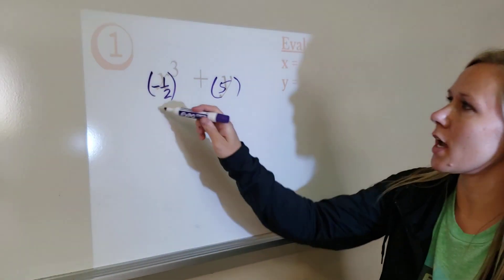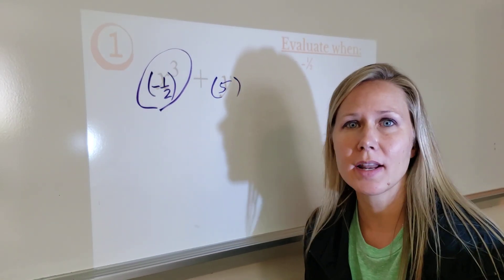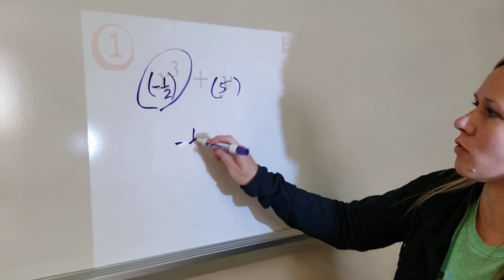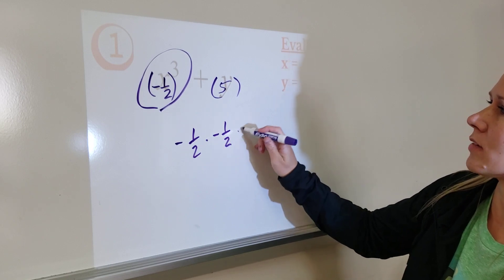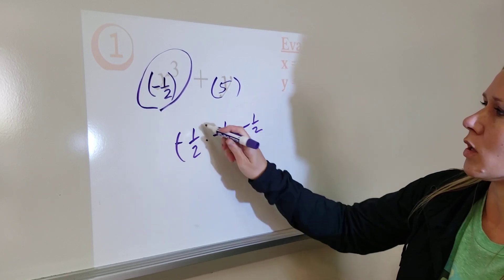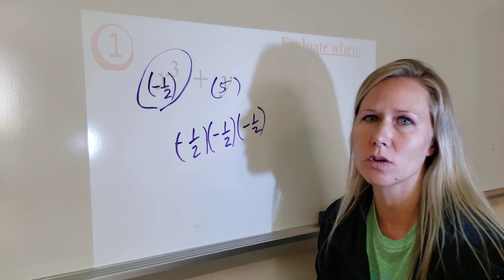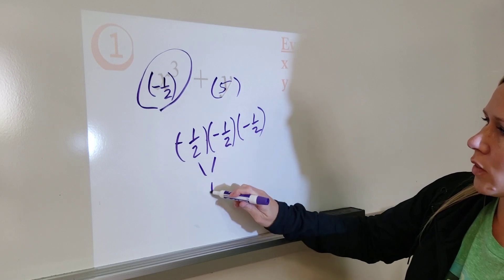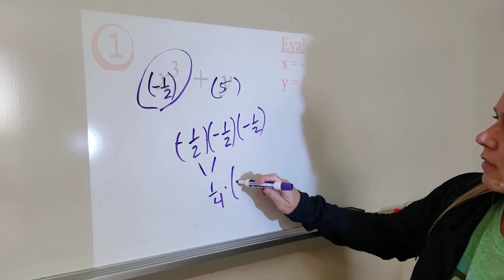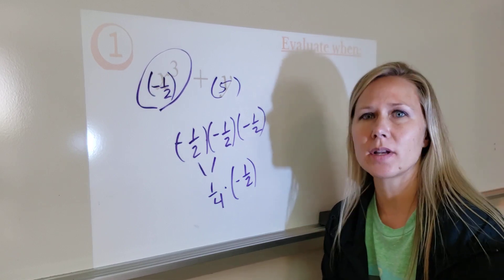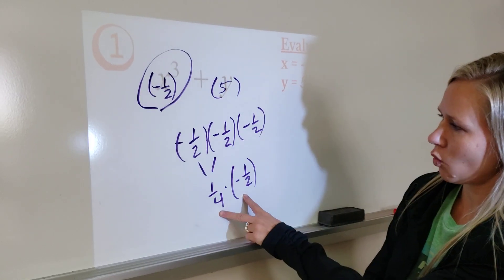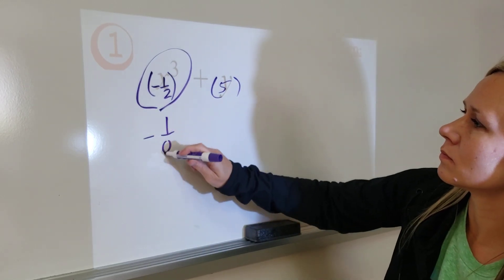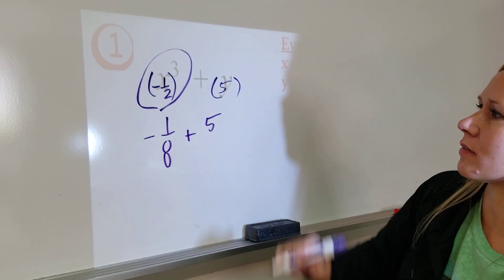Now order of operations — exponent first. When in doubt, write it out; it's always good practice to write this out and not try to do it in your head. So negative one-half cubed is negative one-half times negative one-half times negative one-half. If I multiply the first two, I get a positive one-fourth, and then multiplying by negative one-half I end up with negative one-eighth. Plus five.